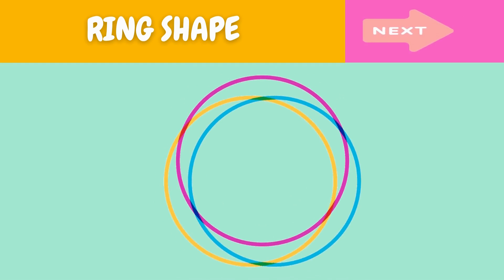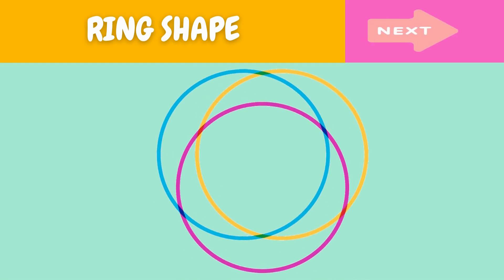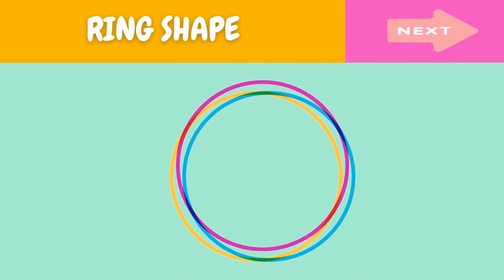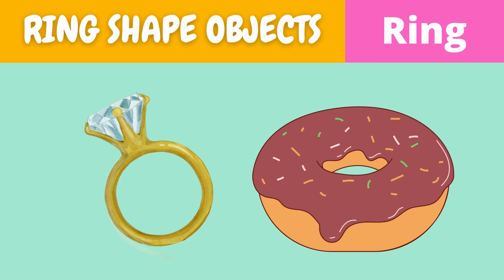This is a ring shape. What is this? This is a ring shape. Here are some examples of ring shaped objects.